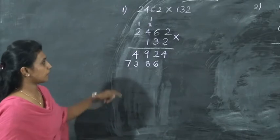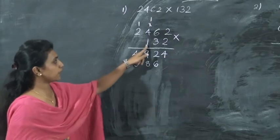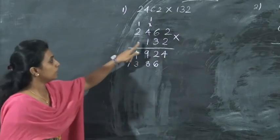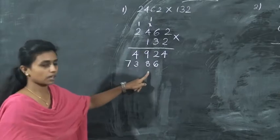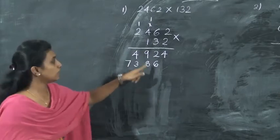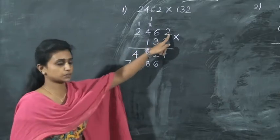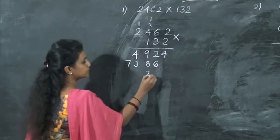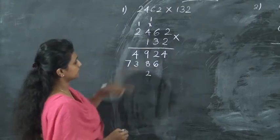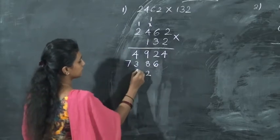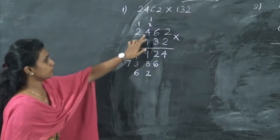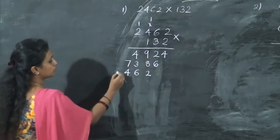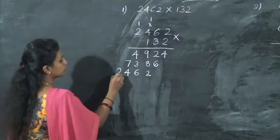Now the last one: multiply this 1 with all these numbers, and write the answer under the hundreds place. 1 twos are 2 — write 2 here. 1 six is 6 — write 6 here. 1 four is 4. And 1 twos are 2.